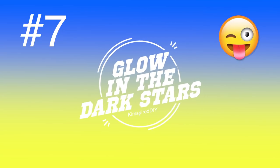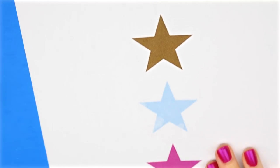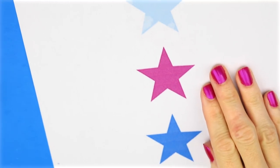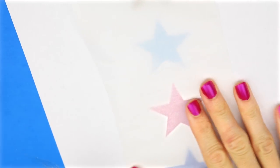The seventh DIY project are glow-in-the-dark stars. For this one, I just printed out some stars. And then I'm also going to use some parchment paper. And I just placed that over the top of the stars and taped it down.